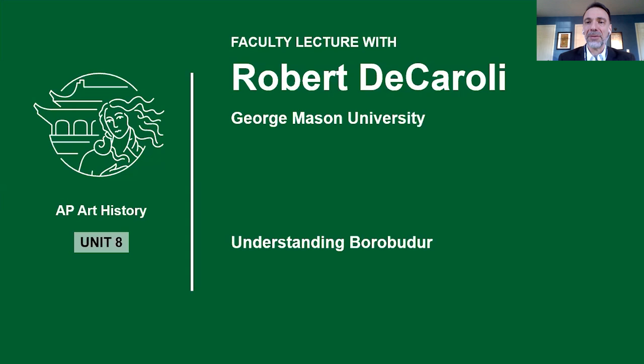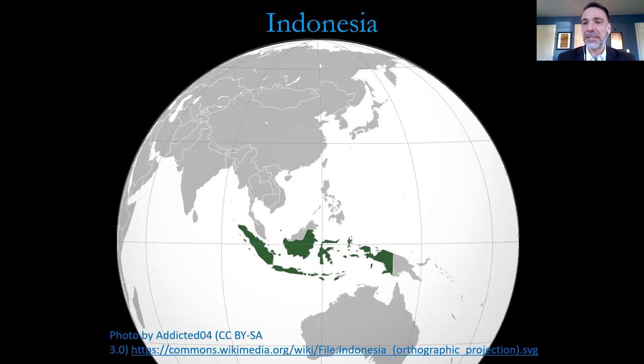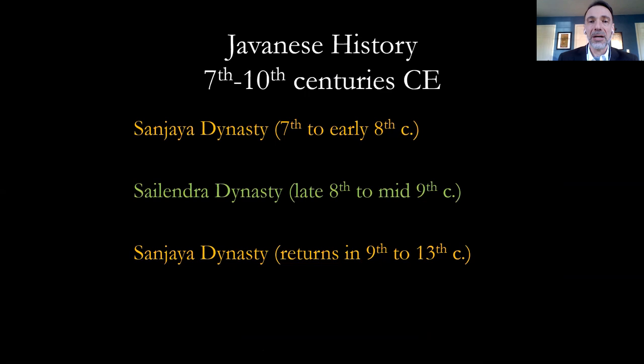Today I'm going to be talking about the monument of Chandi Borobudur. Our lecture is entitled Understanding Borobudur. First, let's situate ourselves. We are in Southeast Asia — that's the orange portions of the map — which is distinguished from South Asia, the green portions. More specifically, we're in the nation of Indonesia, made up of a series of islands. We are specifically on the island of Java, in central Java, where we find our main topic of discussion: the site of Borobudur.